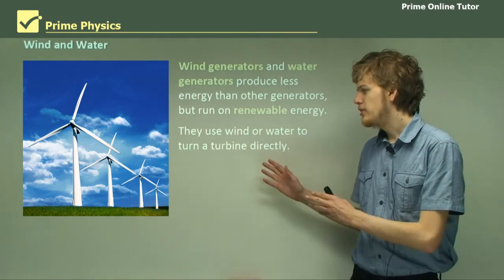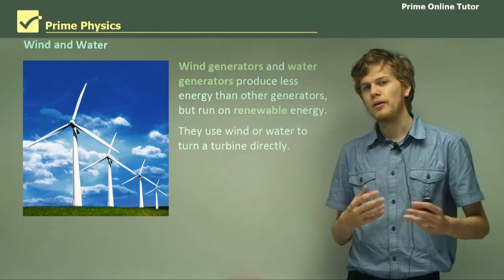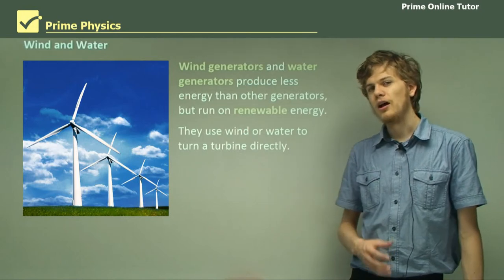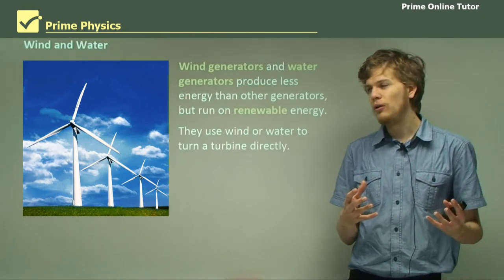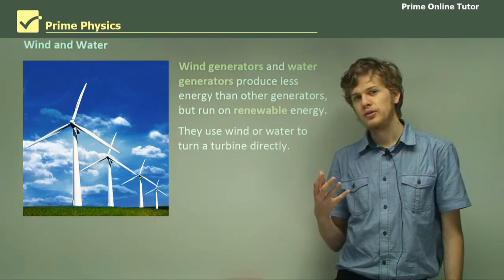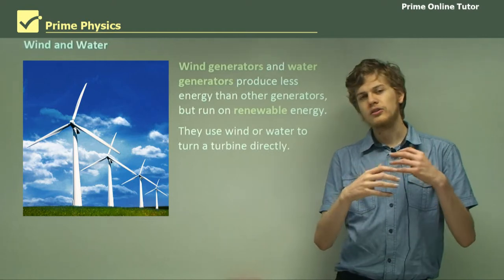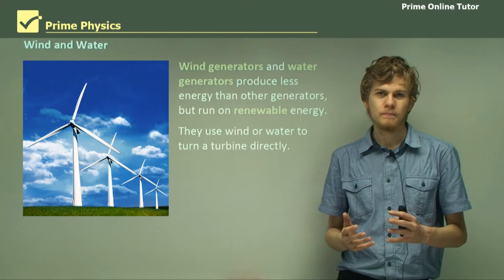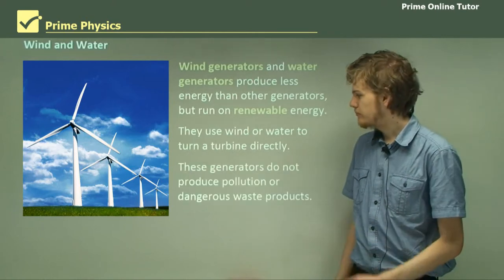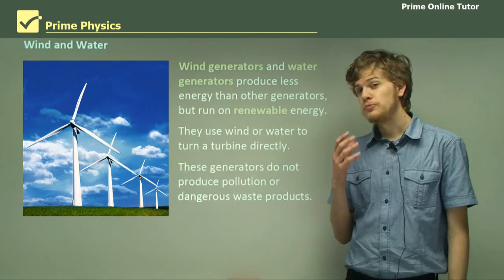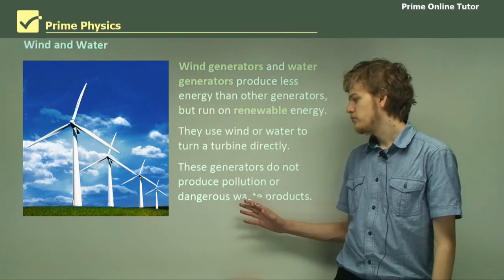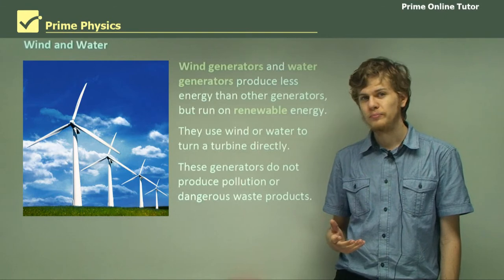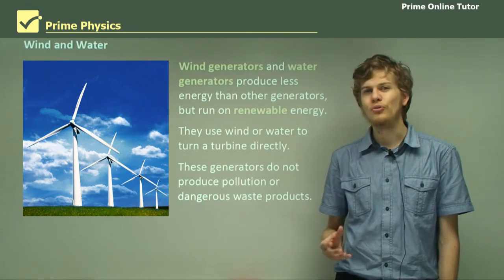Wind generators have long turbines like a windmill. When these are turned by the wind, they spin a magnet, which produces electricity. These generators do not produce pollution, and they do not produce any dangerous waste products like coal and uranium do. And of course they also won't run out.